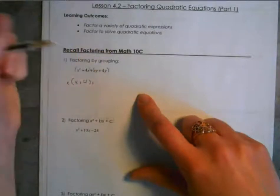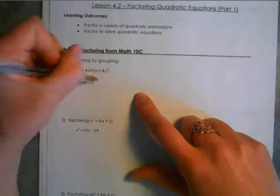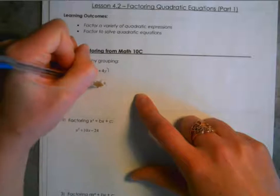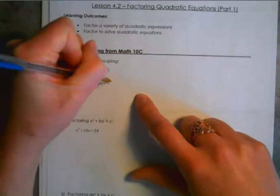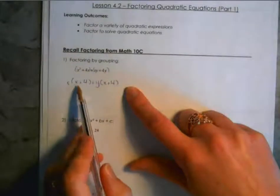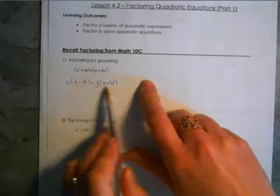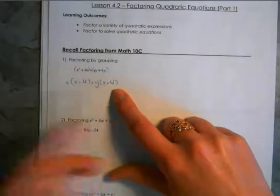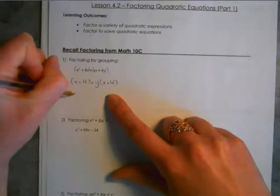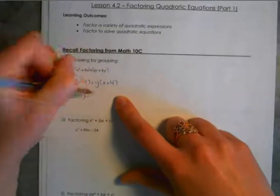In the second bracket, we have x times y added to 4 times y. The thing that's the same in both is y, so we pull that out. If we divide y away from xy, we're left with x. If we divide y away from plus 4, we're left with plus 4. Now we have two sets of brackets that have the same terms — they're both x plus 4. So we can simplify: x plus y goes on the outside as its own bracket, and we multiply that by x plus 4.